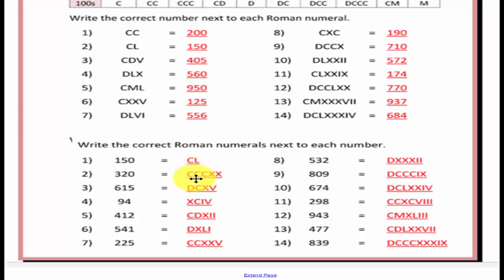Number 2, is CCCXX. Number 3, is DCXV. Number 4, is XCIV. Number 5, is CDXII. Number 6, is DXLI. Number 7, CCXXV.